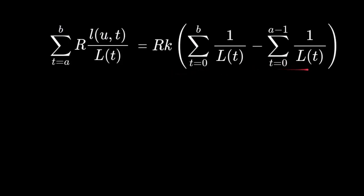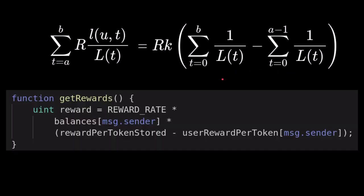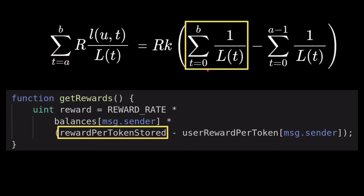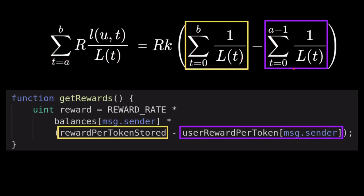Now, why is the equation on the right a better representation than the equation on the left? How can we write an efficient algorithm based on this equation? Instead of running a forward loop to calculate this number, we can store this sum in a single variable, and we'll be able to store this per user in a single variable as well. The code to calculate the reward of a user will look something like this. Notice that there are no forward loops that we need to run.